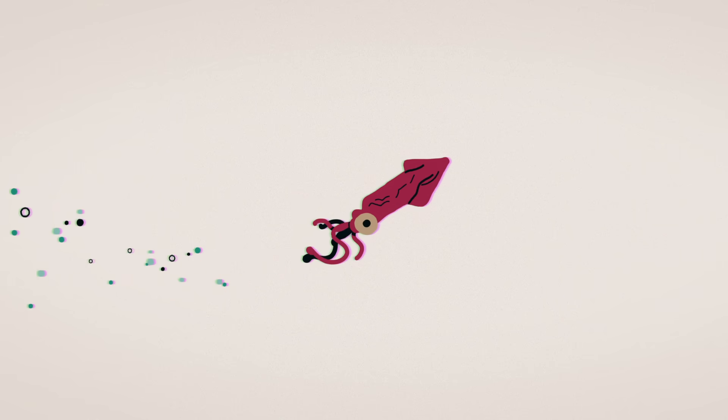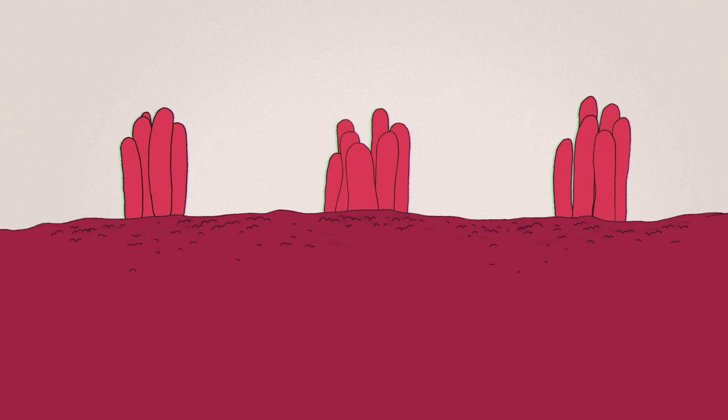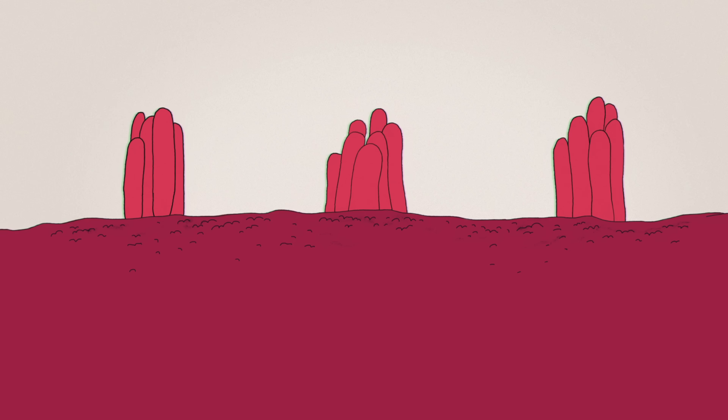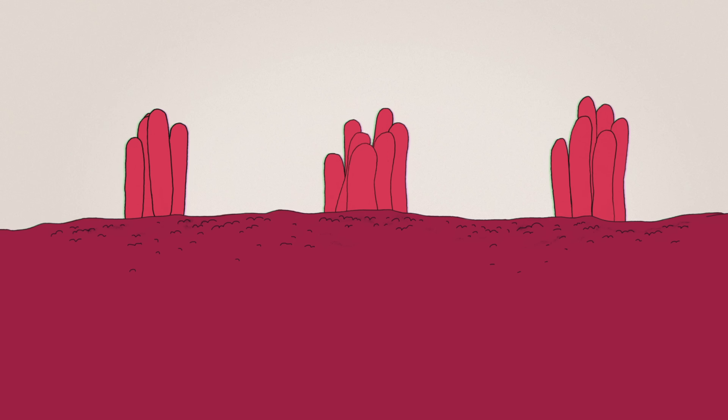squid rely on a secondary sensory system, made from thousands of tiny hair cells that are only about 12 microns long and run along their heads and arms.